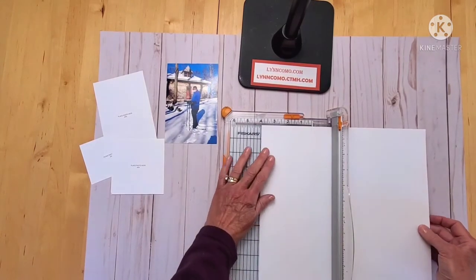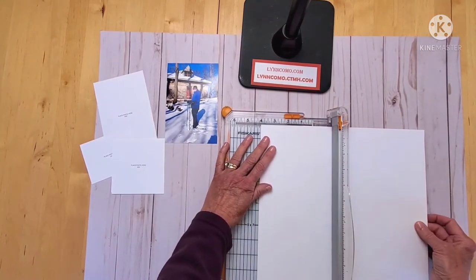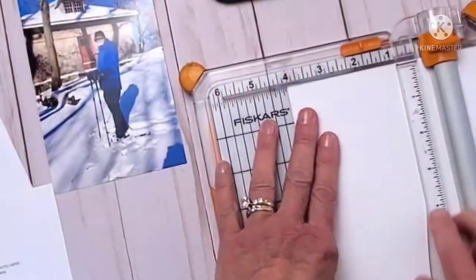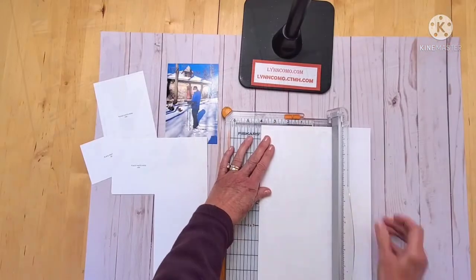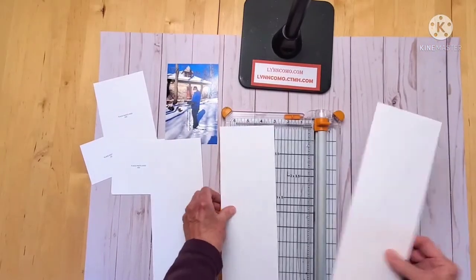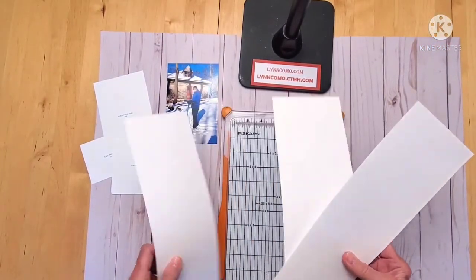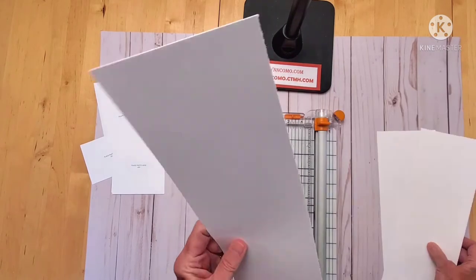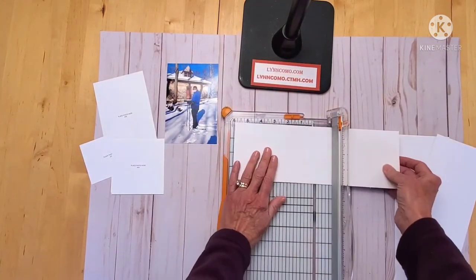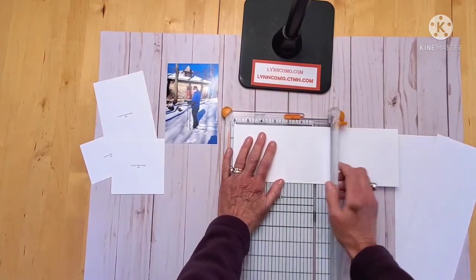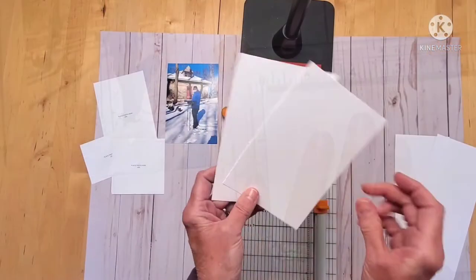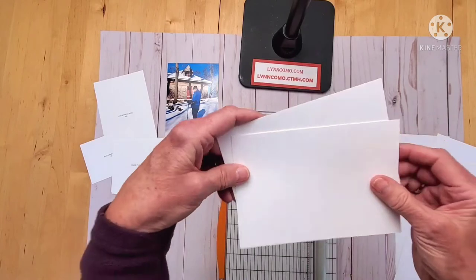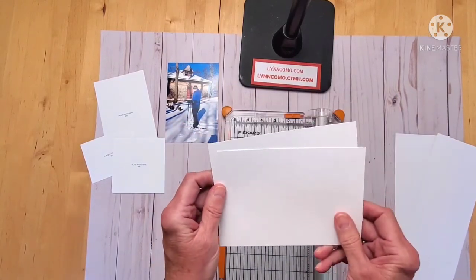The first thing I'm going to do is cut my paper at 4 inches. I'm going to make 3 4x12 cuts. So now I'm going to cut this one in half and I have 2 4x6 or 6x4 photo mats.